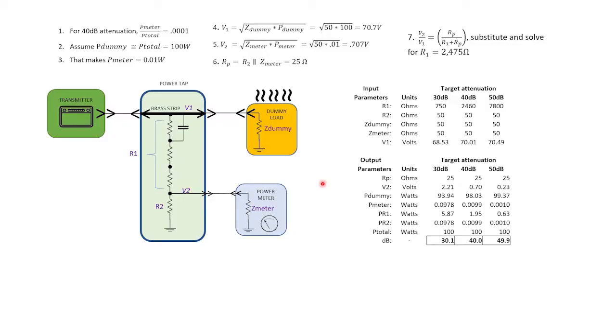Before I get into the construction I want to take a few minutes to go over how it works. So I've put together this illustration. The power tap connects between a transmitter or other RF power source and a load, in this case a dummy load.